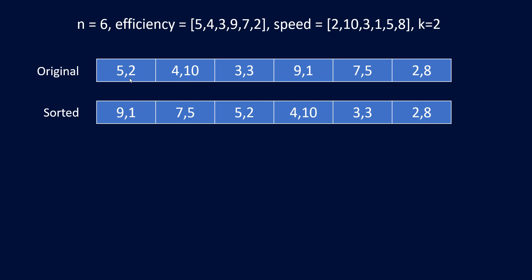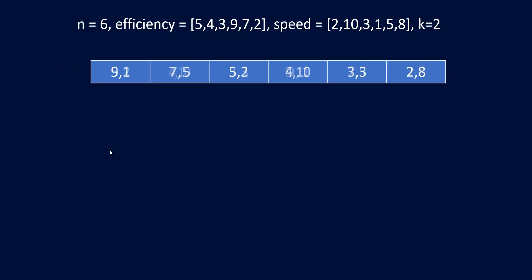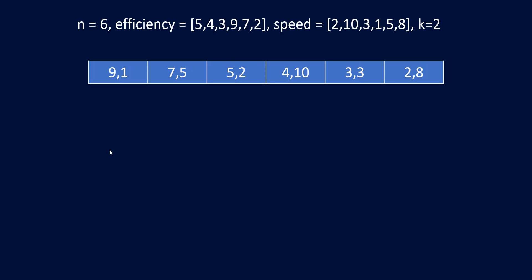We'll take an array of arrays storing efficiency and speed as a pair. This is our original array where each index holds the efficiency and speed of a person. After sorting in descending order of efficiency, we get our sorted array. So the first step is clear: sort the data by efficiency descending and group the data as efficiency-speed pairs.